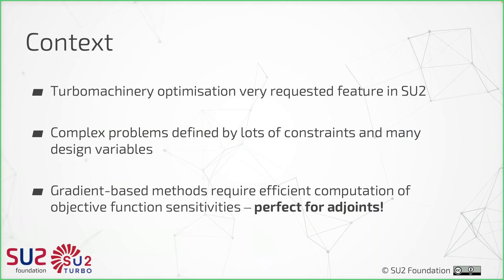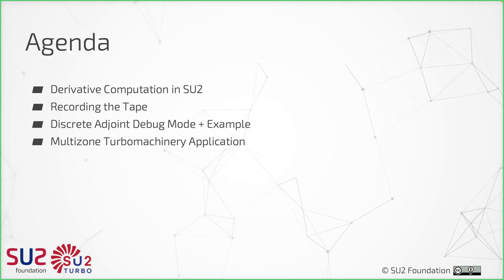These are very complex problems defined by lots of constraints and lots of design variables. If you want to use gradient-based methods, it requires fast and efficient computations of objective function sensitivities — this is perfect for SU2's adjoint solver. The aim of this work is to get what has existed in various branches over the years into master, so people can stop sending messages to the Slack channel.